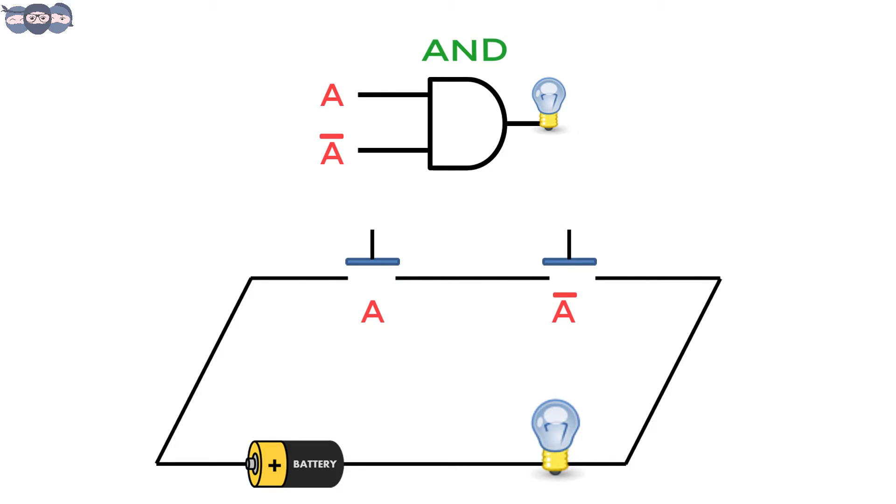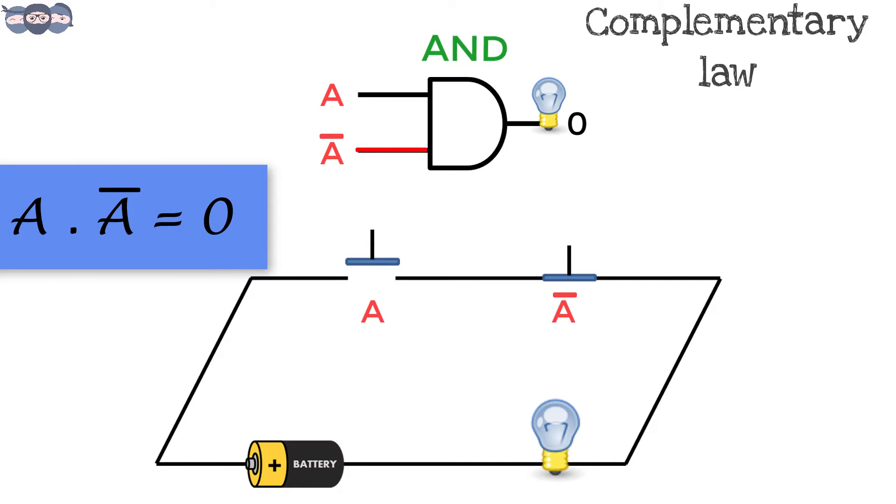Let's take another scenario where A is 0, then A bar will be 1. In such cases, AND gate gives a 0 output. If a variable is ANDed with its complement, the circuit will always be open. Therefore, A and A bar is 0.